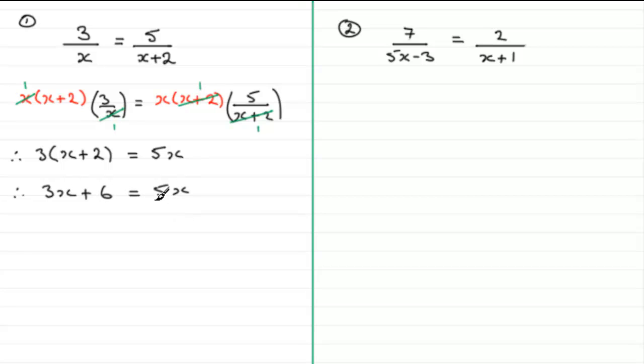And now, noticing that I've got more x's on the right-hand side, I'm going to subtract 3x then from both sides. So, if I take 3x from the left-hand side here, 3x take away 3x just leaves me with 0 there plus the 6. So, I just get left with 6.